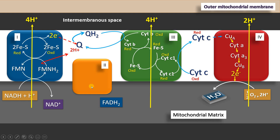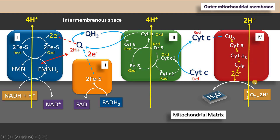Complex II also has iron-sulfur complexes. It acquires electrons from FADH2 and hands over its two electrons to coenzyme Q. Then the electrons are transferred to complex III, then to complex IV, and finally handed over to the final acceptor oxygen.